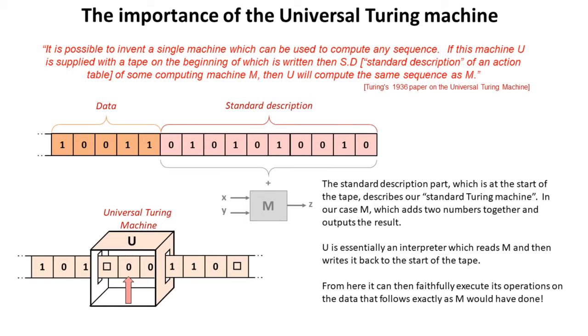As it states, on the start of the tape that we feed in, we need to provide some kind of standard description. Well, in our case, our standard description is a description of our theoretical Turing machine M, which is going to add two numbers together and output the result, and we place the description of this machine at the start of the tape.